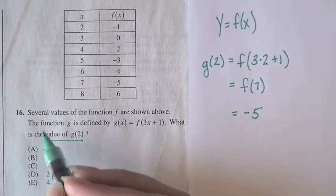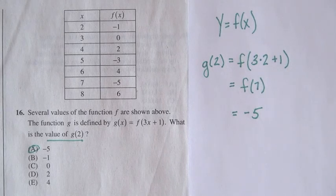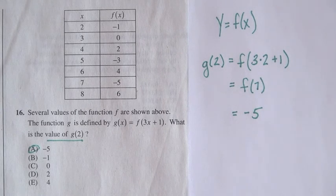So the correct answer is a, negative 5. And that's how you do it. Please continue to check out more Mindfish videos.